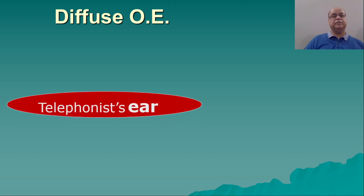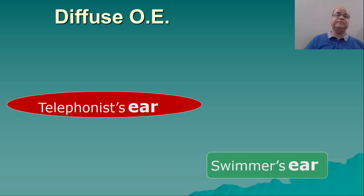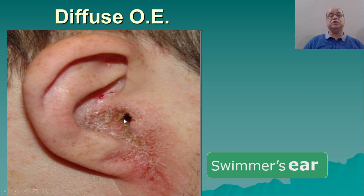Diffuse otitis externa is also called telephonist's ear, because a telephone operator using the telephone for a long time may develop this problem. It is also called swimmer's ear, because swimmers are at greater risk of getting diffuse otitis externa. This diffuse or generalized otitis externa can present with involvement not only of the external auditory canal, but also the skin of the concha and the lobule, due to otorrhea soiling the skin of those areas.